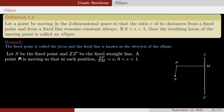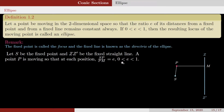Our job will be to choose the x-axis and y-axis wisely and get a nice-looking equation of the ellipse. Let S be the fixed point and ZZ' be the fixed straight line — so S is the focus and ZZ' is the directrix. A moving point P satisfies SP over PN equals e, where e is between 0 and 1.